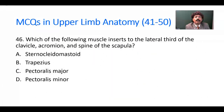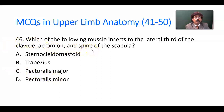Question number 46. Which of the following muscles inserts to the lateral third of the clavicle, acromion, and spine of the scapula? Options: sternocleidomastoid, trapezius, deltoid, pectoralis major, pectoralis minor. The answer is the trapezius muscle — it inserts onto the lateral third of the clavicle, acromion, and spine of the scapula.